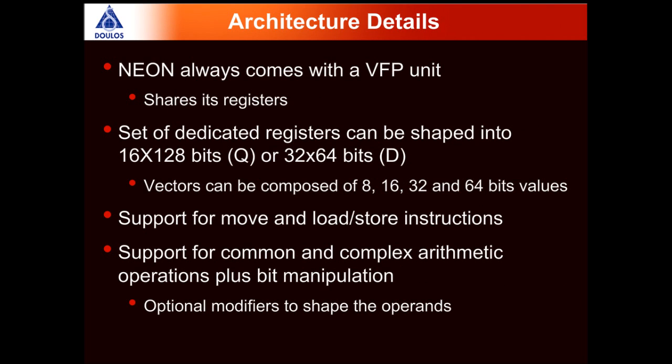Looking at the details of the Neon architecture: Neon always comes with a vector floating-point unit and shares its registers with it. We have new registers available — 16 128-bit Q registers or 32 64-bit D registers. These registers can be composed into vectors whose elements are 8-bit, 16-bit, 32-bit, or 64-bit values.